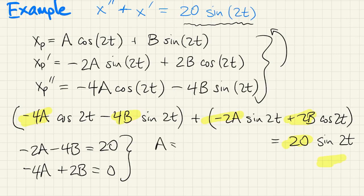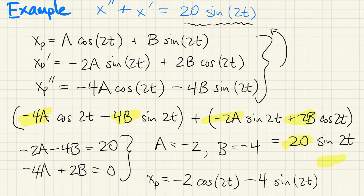Two equations linear for two unknowns. I won't go through the steps, but you can easily solve it to get a and b. So xp has both the cosine and the sine present, even though f of t didn't have the cosine. That's true in general.